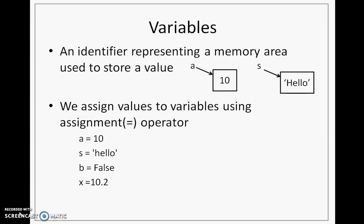Let's first look into variables. In the previous lecture, we learned that a variable is an identifier. It represents a memory area, and that memory area is used for storing a value. Here you see there is a memory area that is created, inside this memory area a value 10 is stored, and this memory area is represented by an identifier called A. That is why A is a variable.